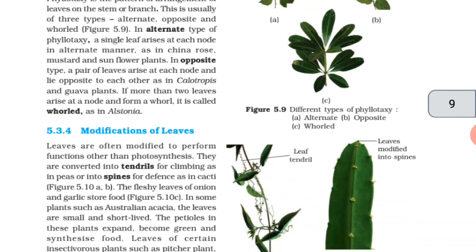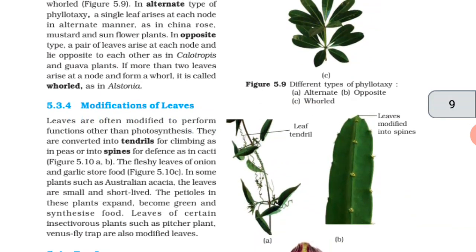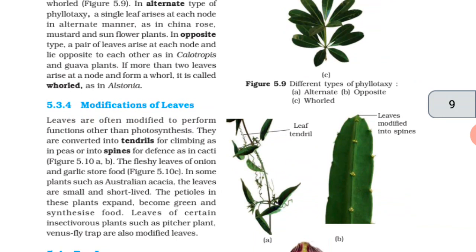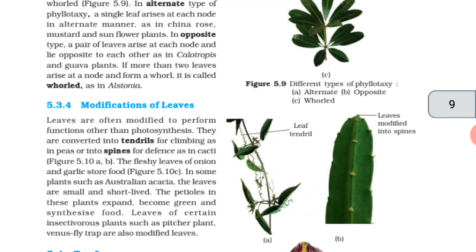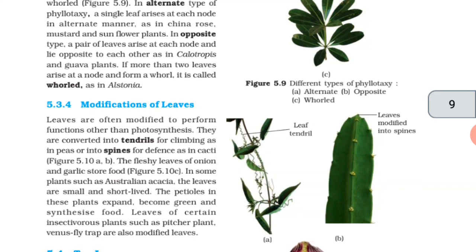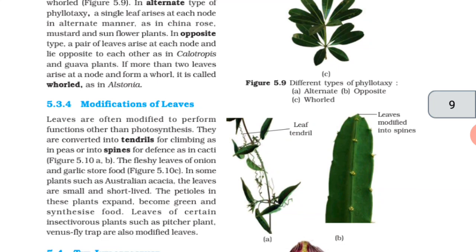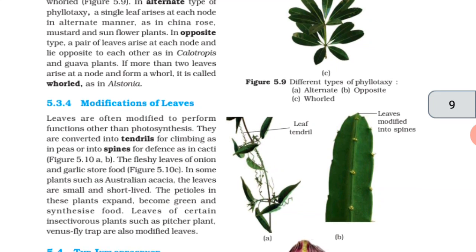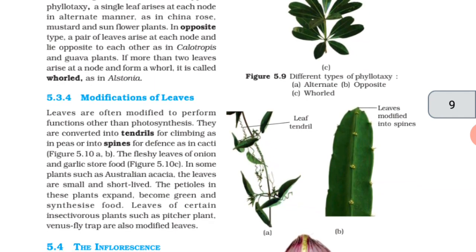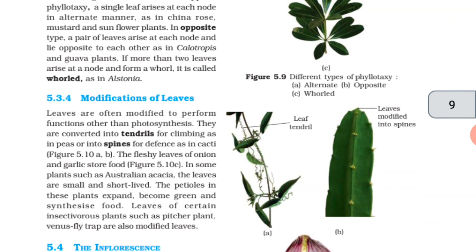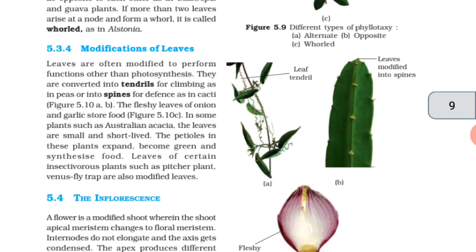Modifications of leaves. Leaves are often modified to perform functions other than photosynthesis. They are converted into tendrils for climbing as in peas or into spines for defense as in cacti. The fleshy leaves of onion and garlic store food. In some plants, such as Australian acacia, the leaves are small and short-lived. The petioles in these plants expand, become green and synthesize food. Leaves of certain insectivorous plants, such as pitcher plants, Venus flytrap, are also modified leaves.